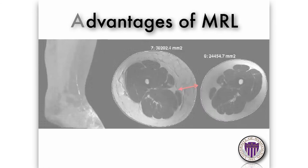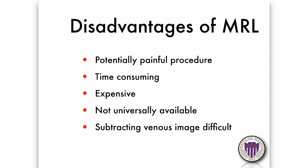The disadvantages are that it's potentially painful — having gadolinium injected into your hand is not something most patients are comfortable with. It's time consuming; when we started, the MRs took about three to four hours, but we've now got it down to about an hour to an hour and a half. It is expensive and not universally available. Until we started using ferroheme, subtracting the venous image was very difficult, but with ferroheme that's become much easier and more useful.